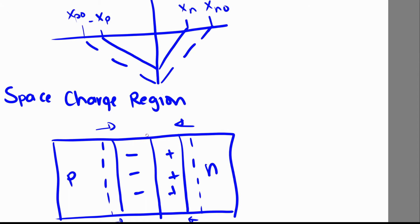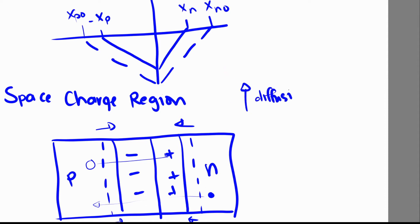The decrease in electric field leads to the narrowing of our space charge region or the depletion region. Since the depletion region narrowed, the barrier that electrons and holes need to cross to reach the other side becomes smaller. So holes have a smaller barrier, and there's a greater chance they can diffuse to the N-type region. Same for the electrons — a smaller barrier means a greater chance they can flow to the other side. By decreasing the space charge region, we're increasing the diffusion current.